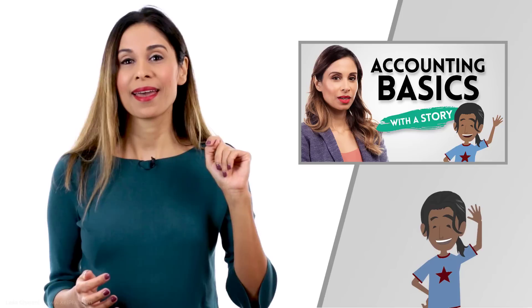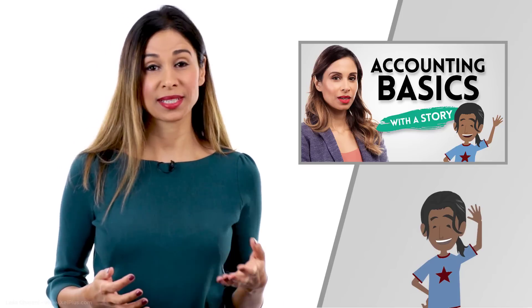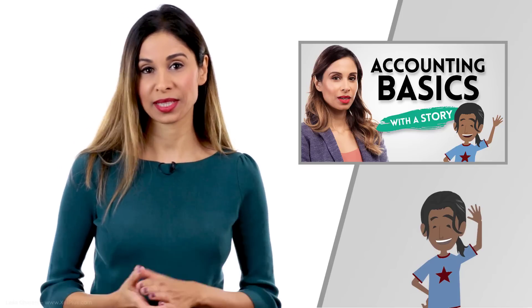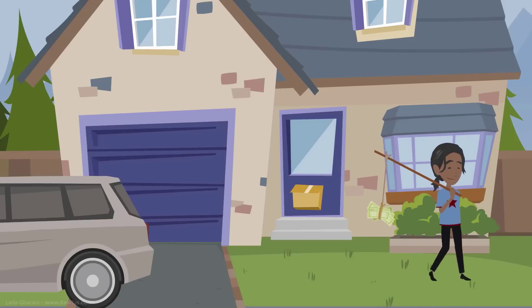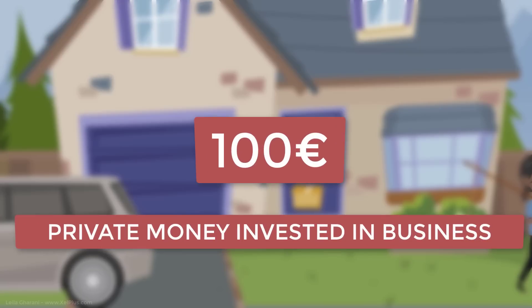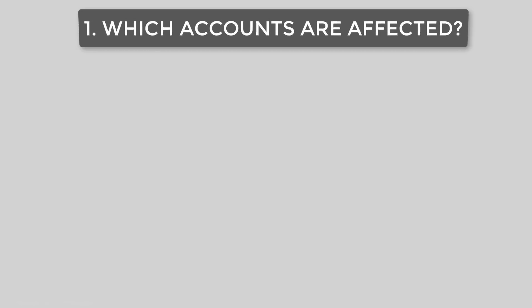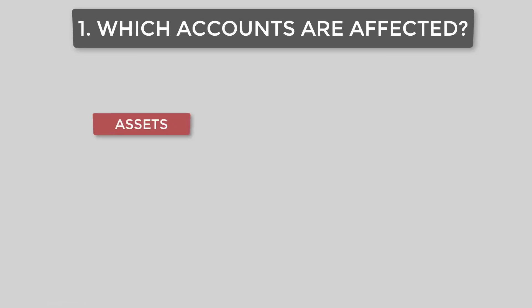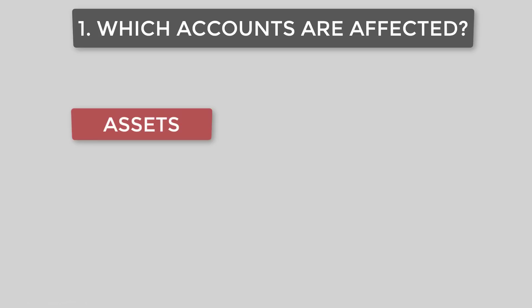Remember Claudio? We followed his Italian beach business in a previous video, and now it's time to record the transactions that happened during his day. Let's start with Claudio leaving his home in the morning. He left with 100 euros in his pocket — his private money that he invested to start the business. Let's record this transaction. Which accounts are affected? Assets — that's resources the company owns and uses. He left with 100 euros in cash, and cash is an asset, so yes, assets are affected.